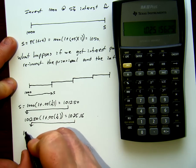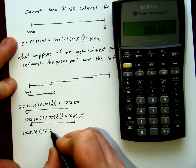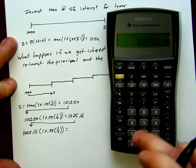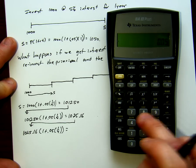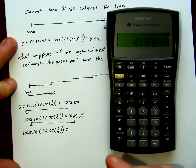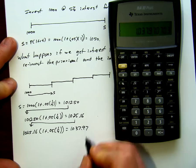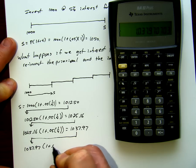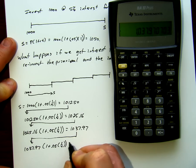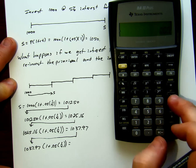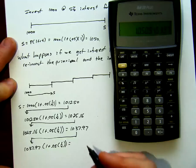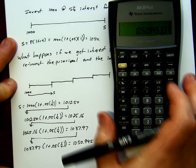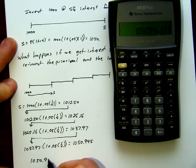Moving on, $1,025.16 times (1 + 0.05 × 1/4) for the third quarter equals $1,037.97. And doing this once again for the last quarter: $1,037.97 times (1 + 0.05 × 1/4) equals $1,050.95.